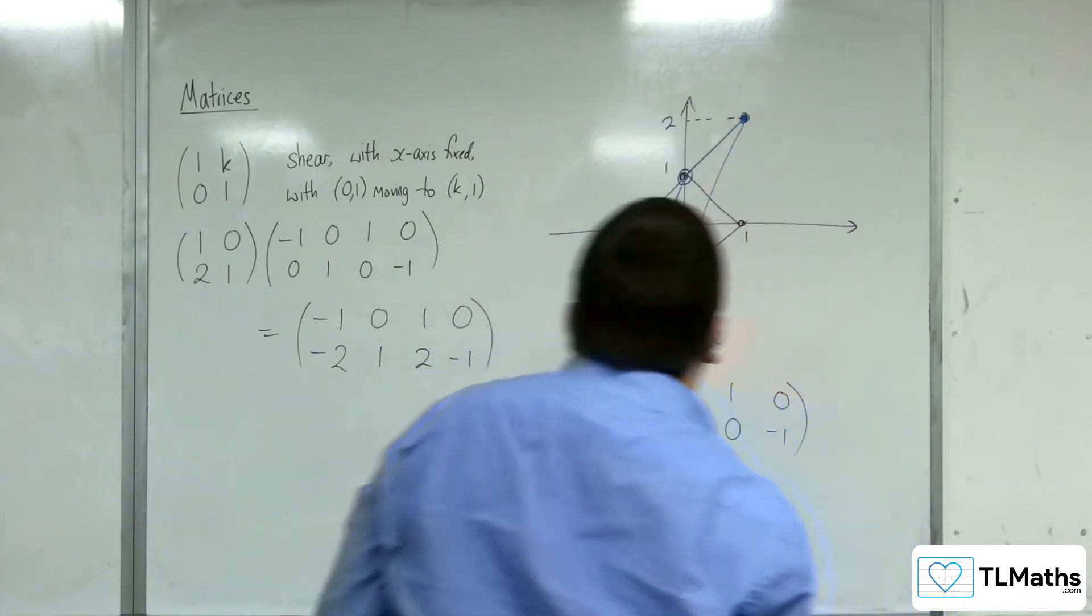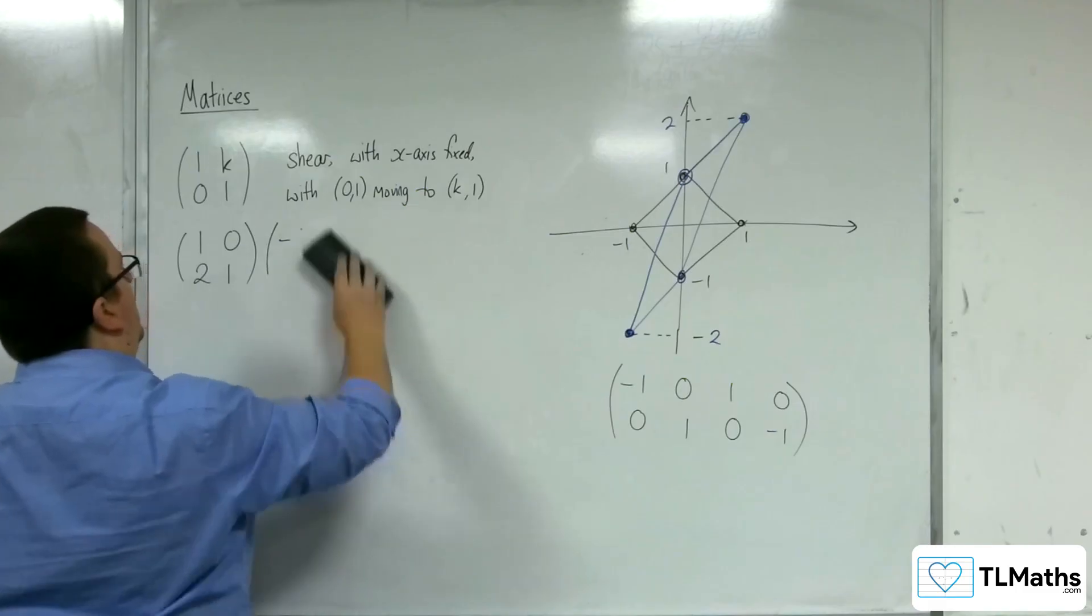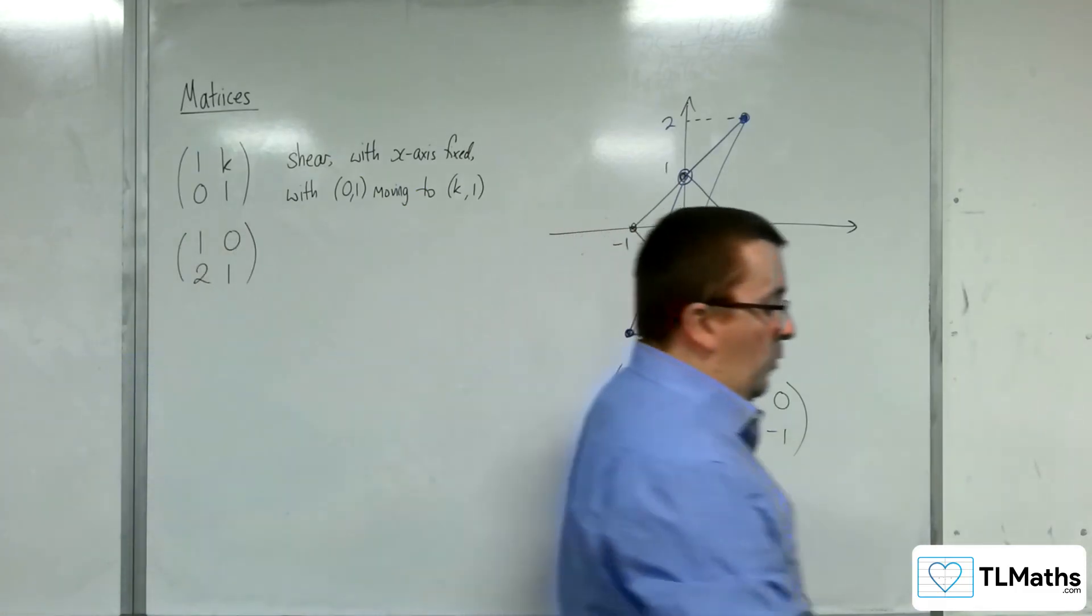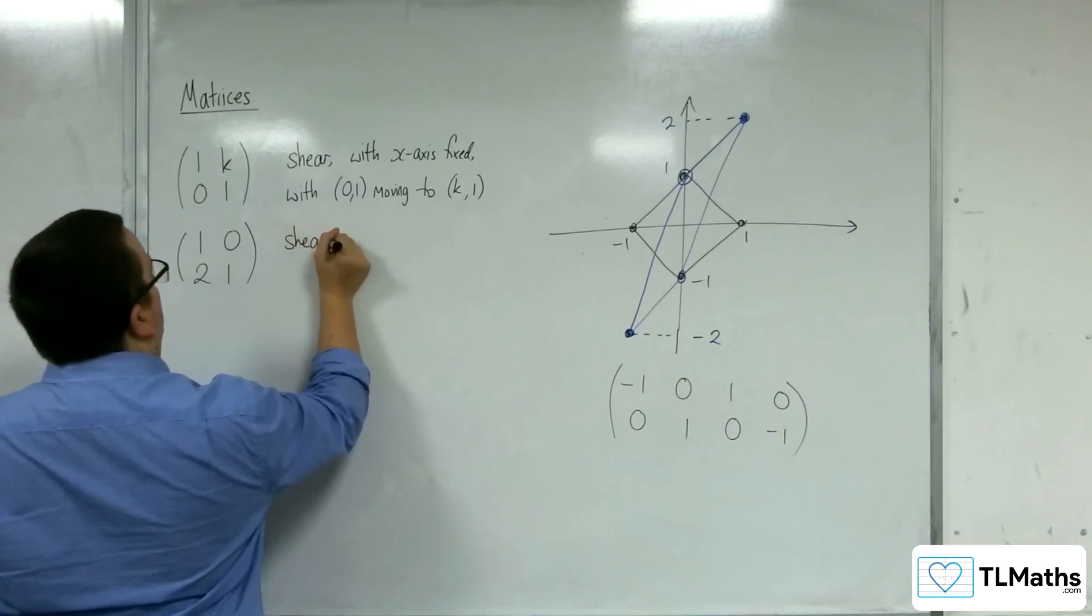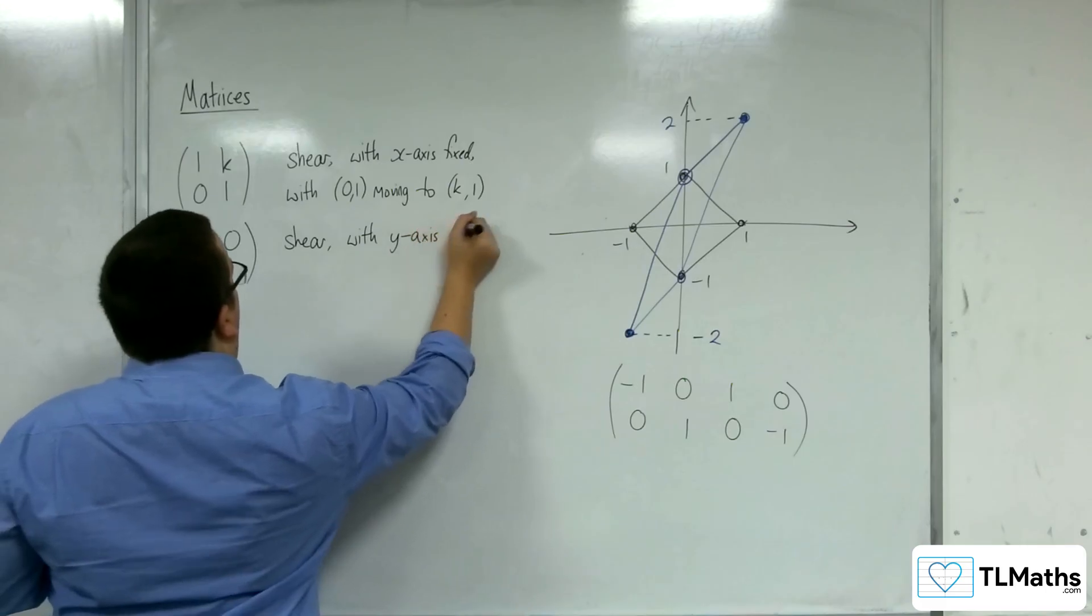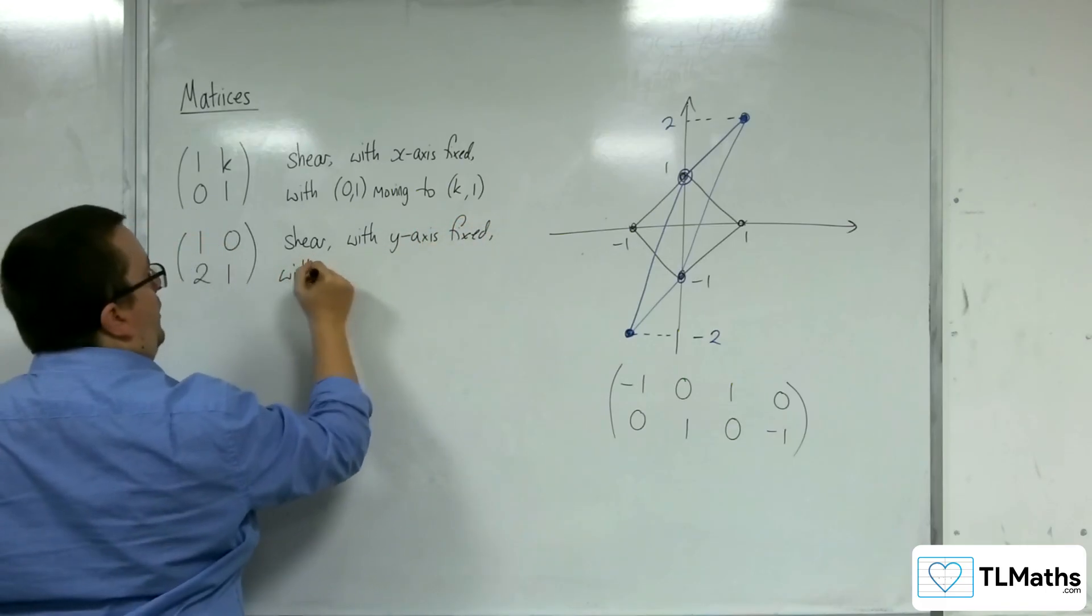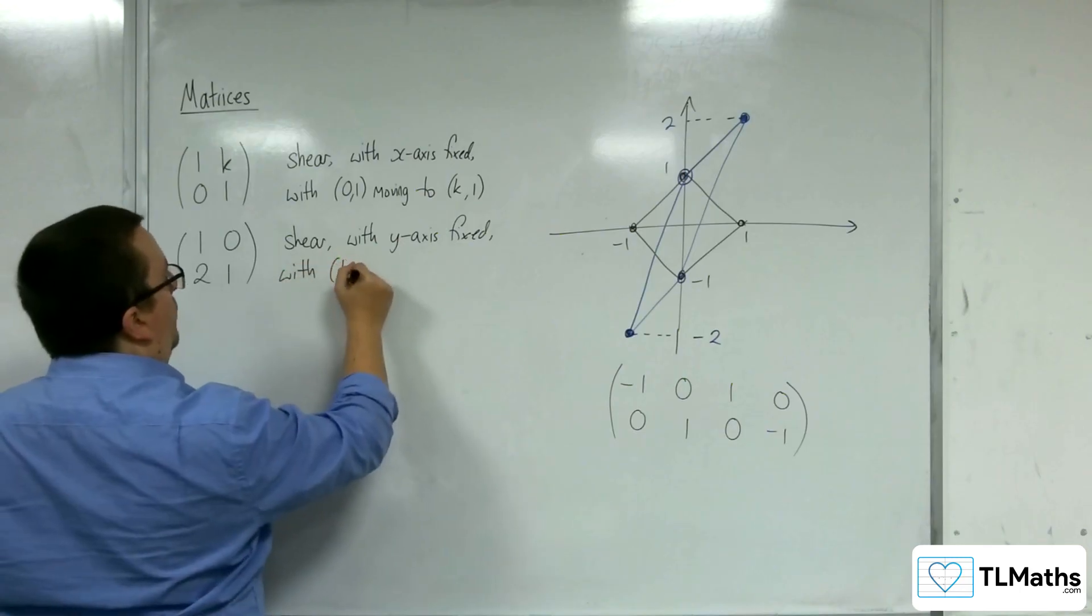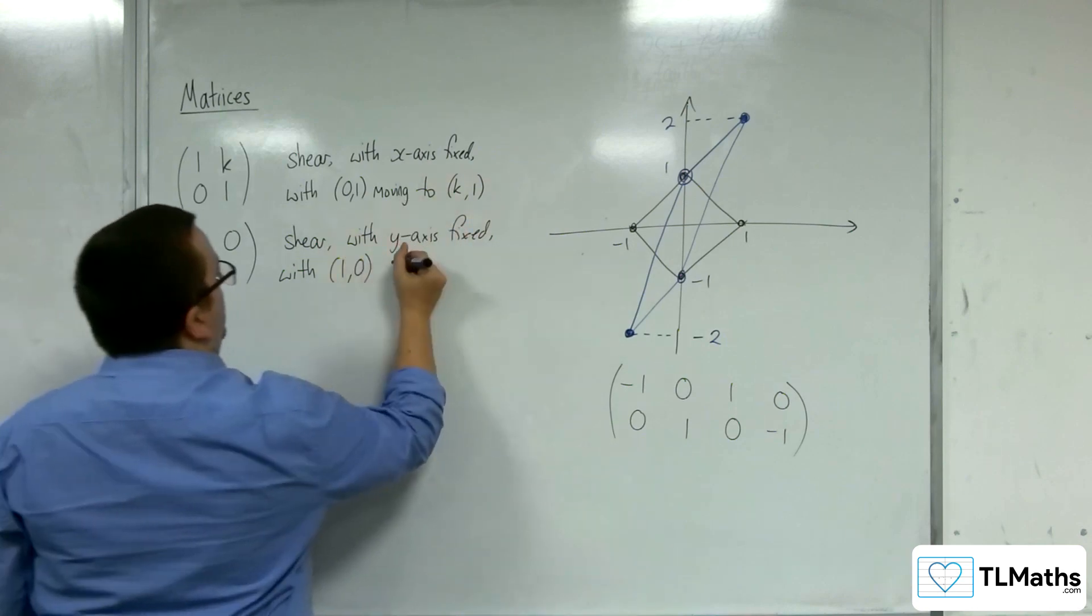So in order to generalize this, or to describe it first, we would call this a shear with the y-axis fixed this time. And choosing a general point, a point that's not on the y-axis rather, 1, 0, that's been mapped to 1, 2.